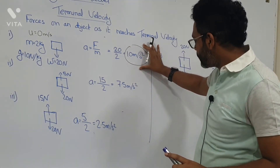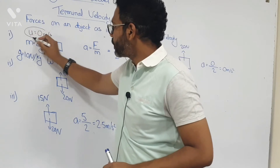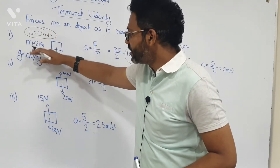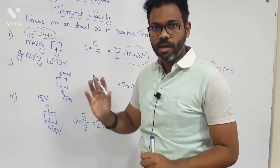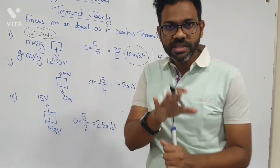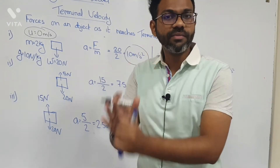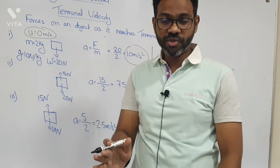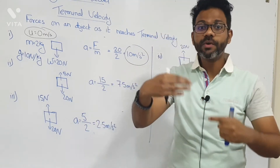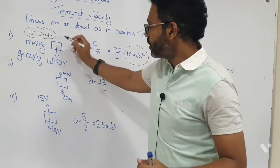As the object is accelerating, its velocity is going to increase — it was initially at rest, now its velocity increases. One thing you should remember: the air resistance acting on an object depends on the velocity of the object. The faster the object moves, the greater the air resistance acting on it.